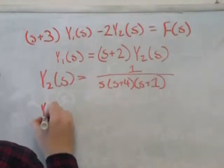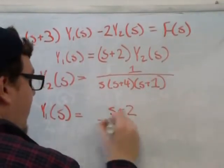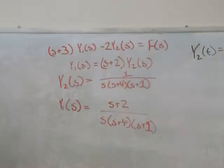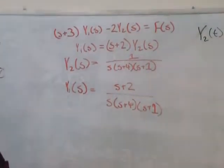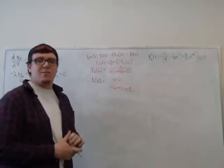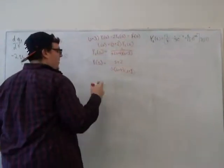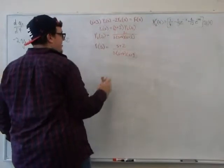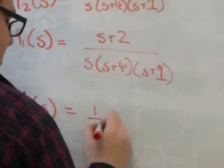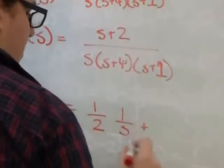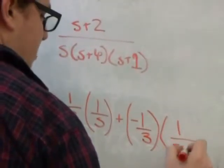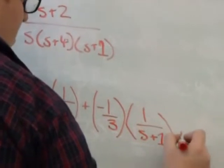So we can write that y1(s) is equal to (s+2) over s times (s+4) times (s+1). Now again, this is not a form we are familiar with. So we need to use partial fractions. Apologies. Partial fractions to expand this into a form we are familiar with. And in doing so, you know the form, it will be a/s + b/(s+4) + c/(s+1). And then you end up with y1(s) equals 1/2 times 1/s plus 1/6 times 1/(s+4) plus 1/3 times 1/(s+1).